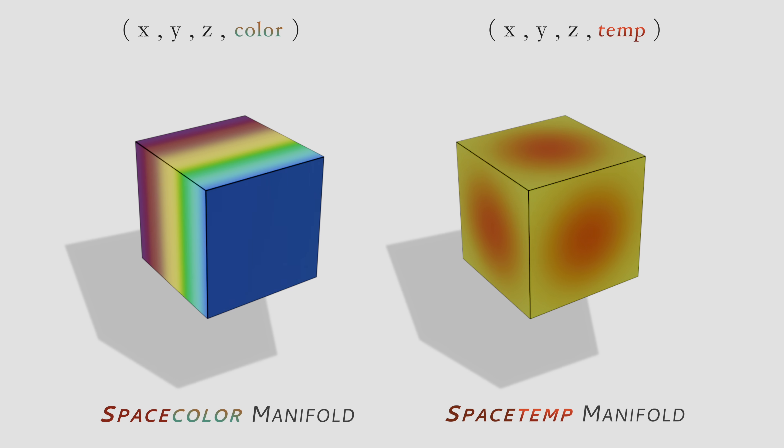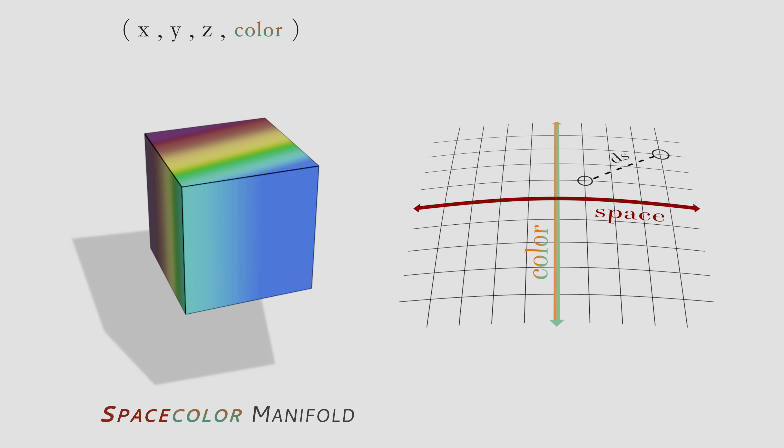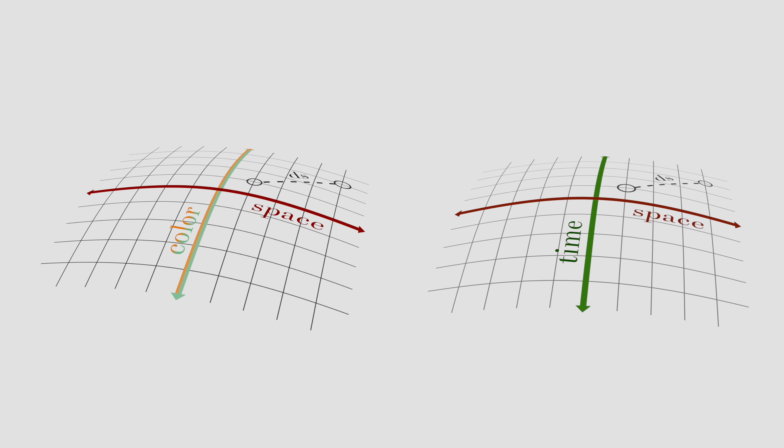We could even, under certain circumstances, define abstract notions of distance and curvature upon this manifold, just as we do with the spacetime manifold.